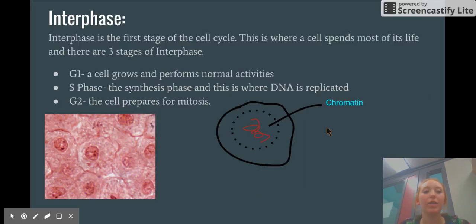Interphase. Interphase is the first stage of the cell cycle. This is where a cell spends most of its life, and there are three stages of interphase. G1: A cell grows and performs normal activities.